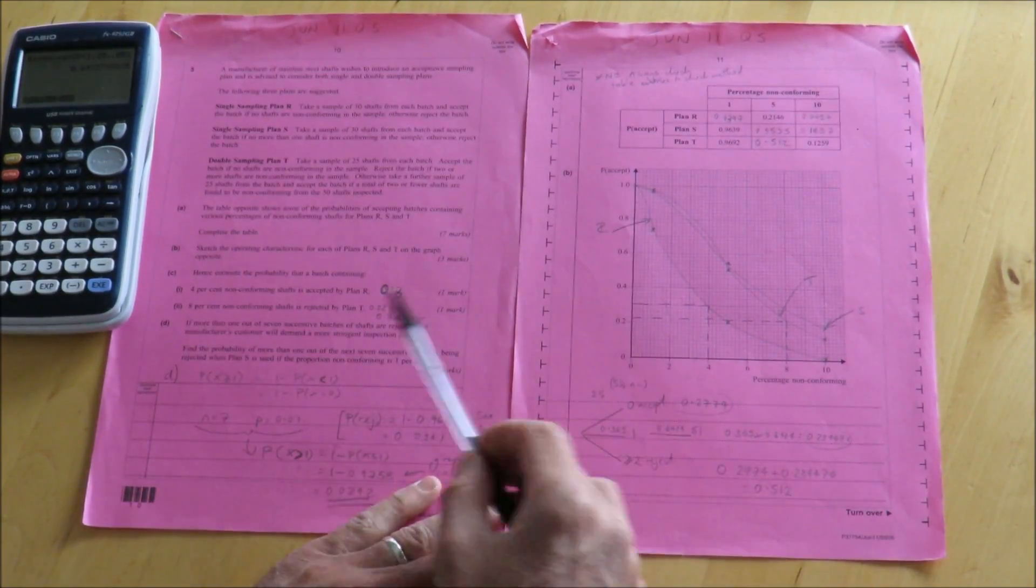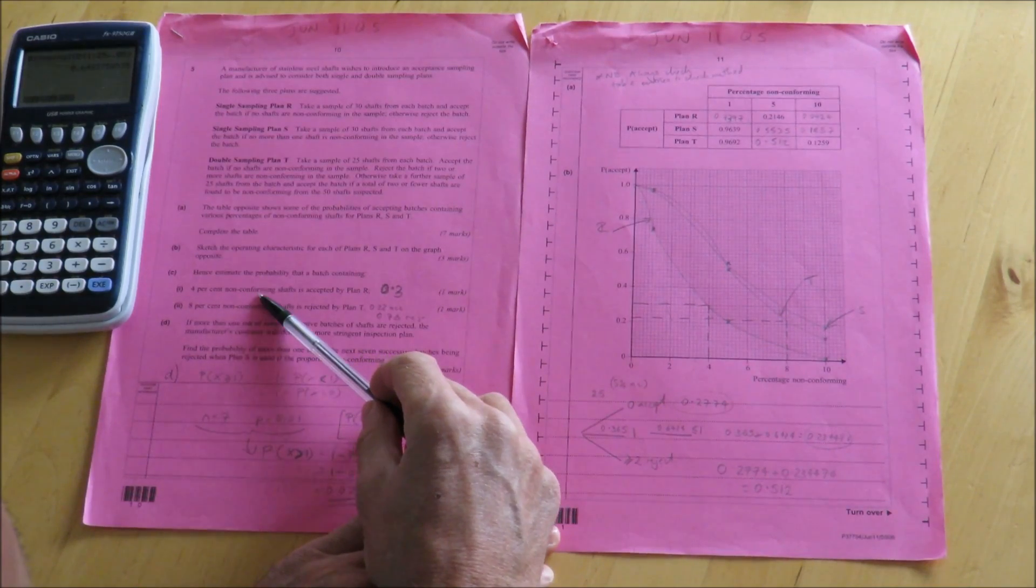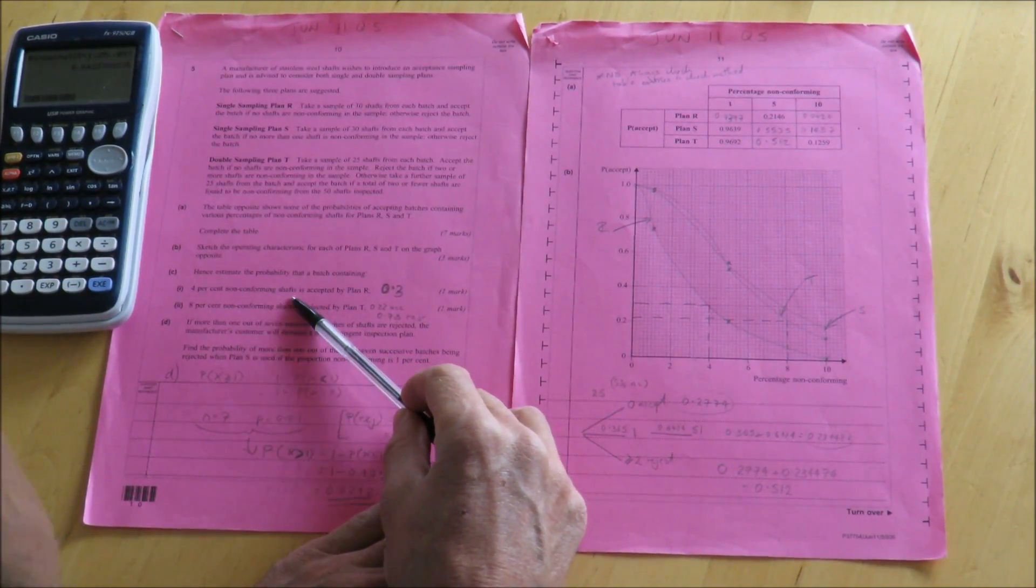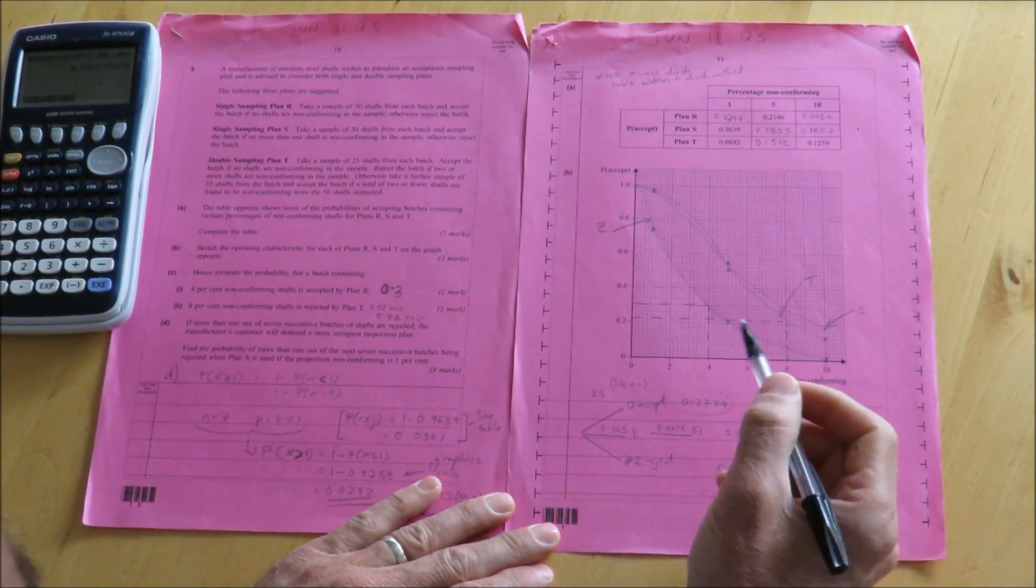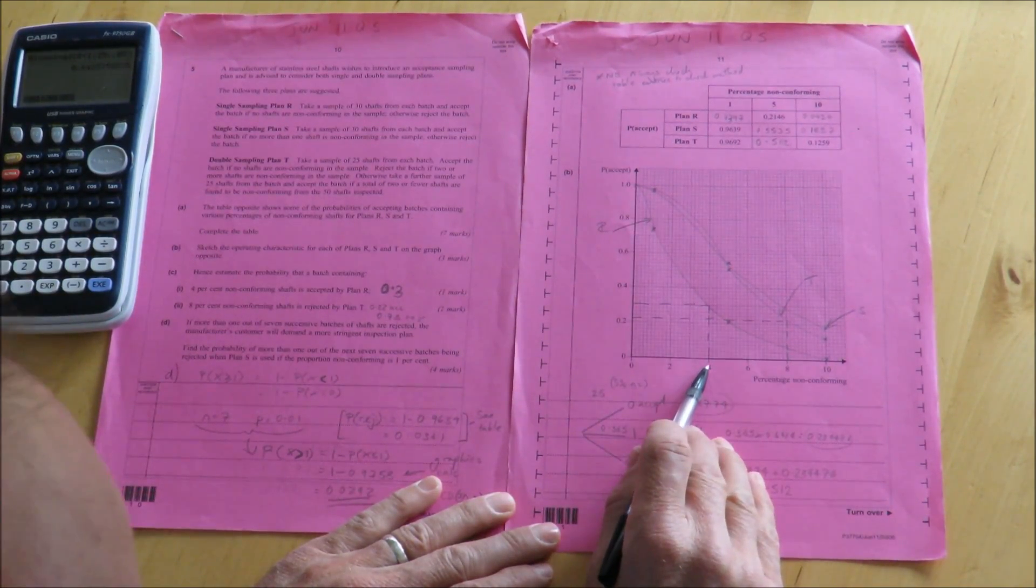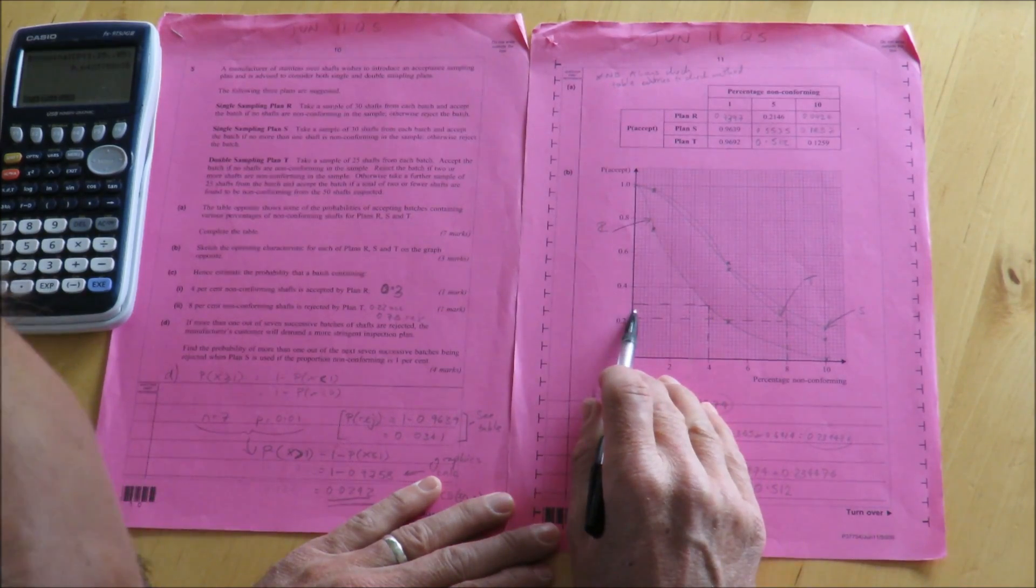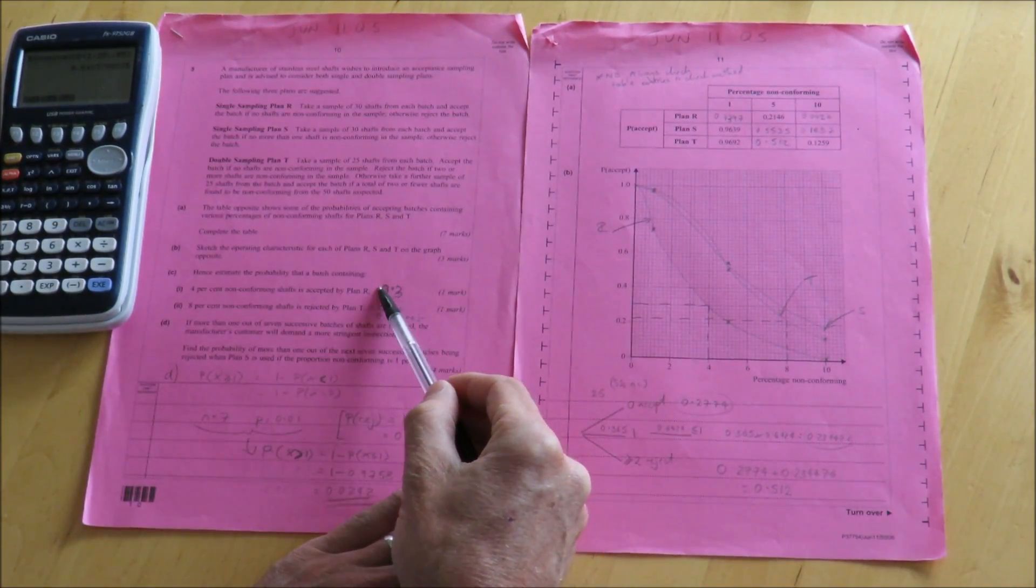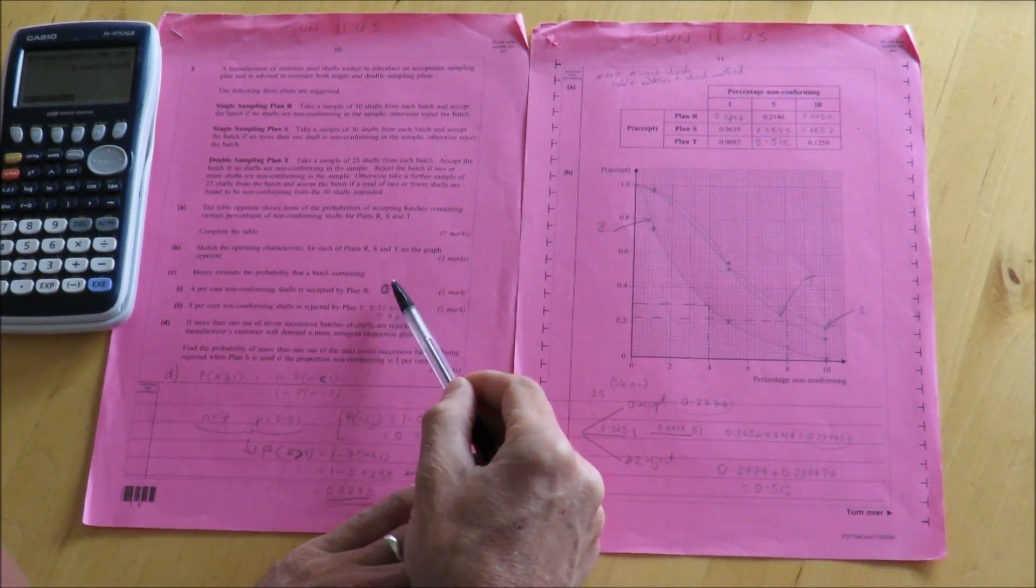Hence estimate, from the diagram, the probability that a batch containing 4% of non-conforming shafts is accepted by Plan R. So what I'm going to do here is I'm going to look at my curve, which is R. I'm going to go up from 4% and across, and I'm going to estimate that as 0.3, and that's my answer, which goes just there.